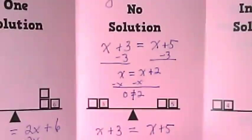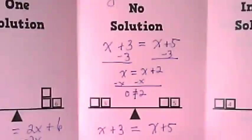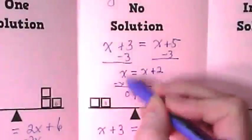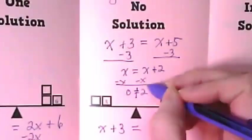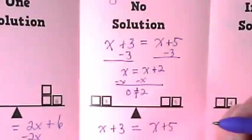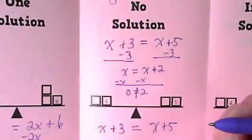Not true. How did I get the 0? I took away X from both sides. That left me with nothing over here. This X also zeroed out, and we had the 2 left, and 0 does not equal 2.